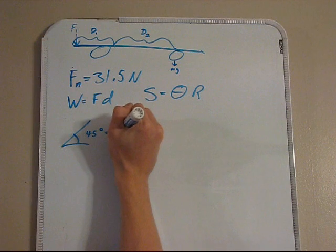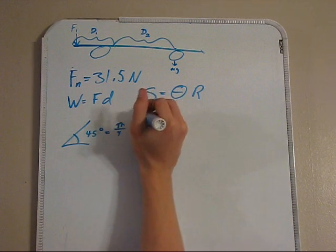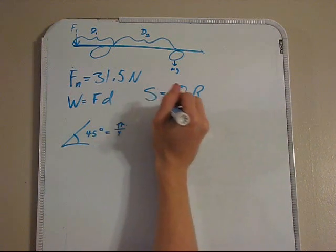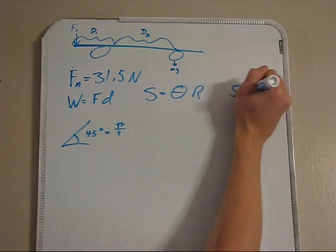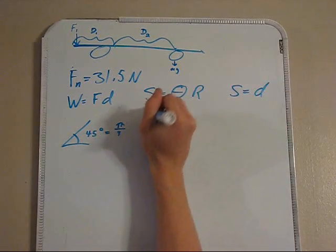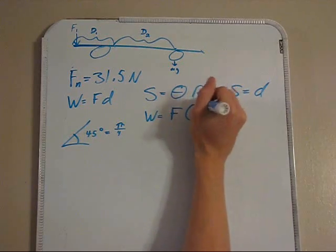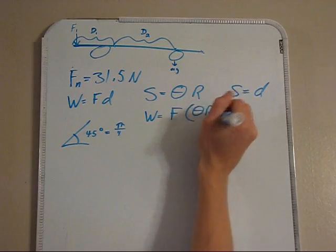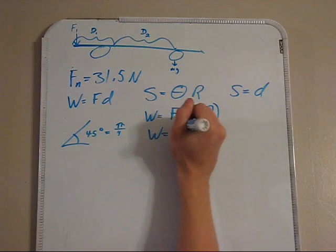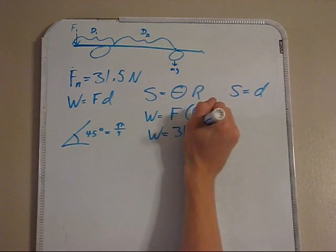We can then solve for distance using this equation, s equals theta r, where s, the arc length, is equal to theta r, and r is the radius, and theta is 45 degrees, or in radians, which the equation requires is pi over 4 radians.